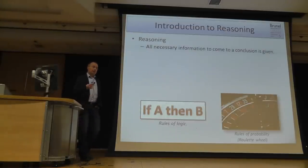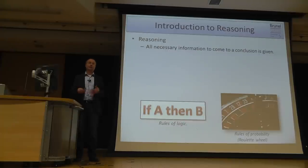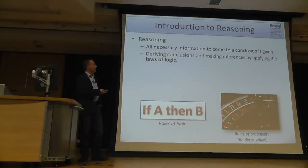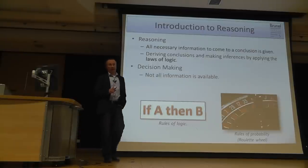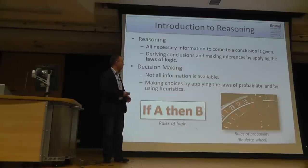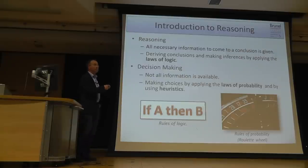In the context of reasoning research, basically all the necessary information we need to come to a conclusion is given, so we know everything and can apply the laws of logic. To differentiate that from decision-making: in decision-making we don't have all information available. We have to use laws of probability and heuristics to come to a conclusion. That's one of the characterizing differences between reasoning and decision-making.